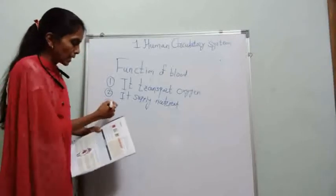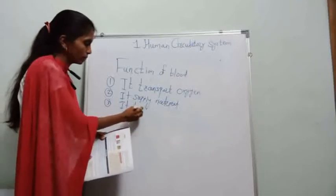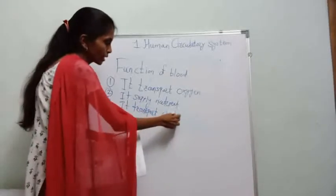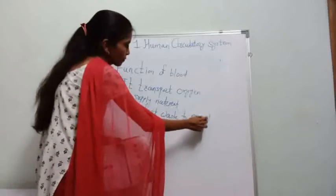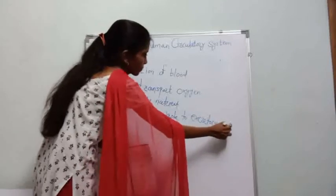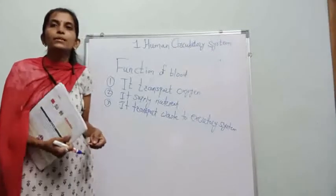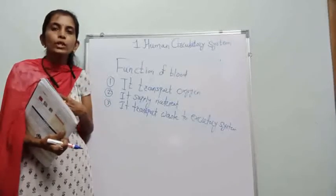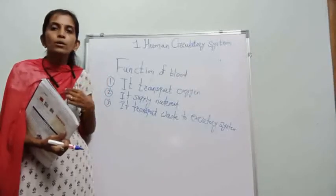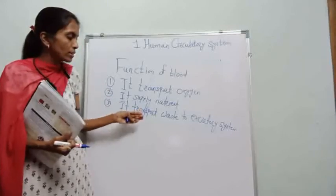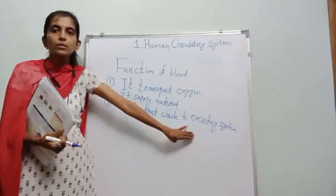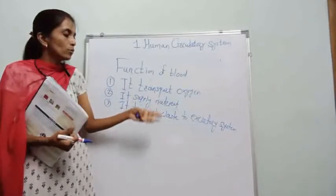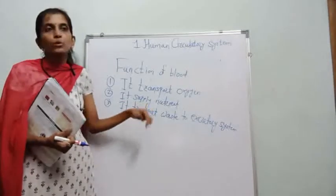The third function is that blood transports waste to the excretory system. When we eat food, some essential nutrients are absorbed, but the parts that are not digested become waste. Blood transports these waste products to the excretory system, which helps remove them from the body.